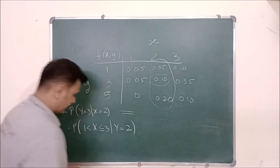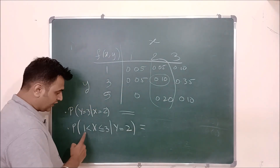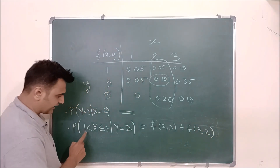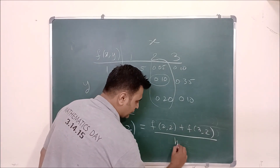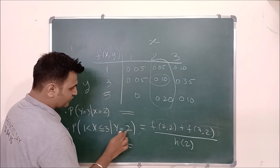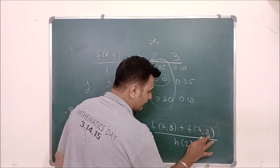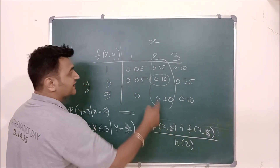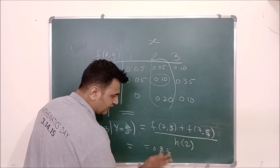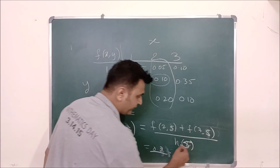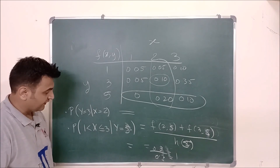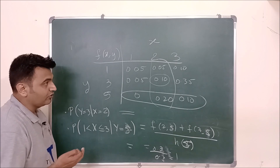For the second question, we need P(2 ≤ X ≤ 3 | Y=5). The numerator is f(2,5) + f(3,5). From the table, f(2,5) = 0.2 and f(3,5) = 0.1, so the numerator is 0.3. The denominator is h(5), the marginal for Y=5, which means fixing Y=5 and varying X — this also equals 0.3. So the answer is 0.3/0.3 = 1.